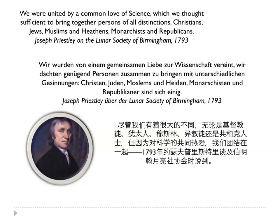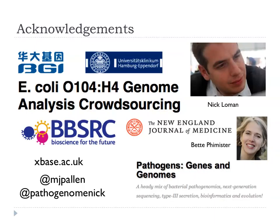I'd like to leave with a thought about internationalism in science that goes back to Birmingham in the 18th century. There was a group called the Lunar Society of Birmingham — prominent scientists, industrialists, and entrepreneurs — and Joseph Priestley was one of the members, pointing out that it was their common love of science that bound them all together. Finally, acknowledgements to BGI, the guys in Hamburg, the crowdsourcing consortium, BBSRC that funded Nick Lohman, and the New England Journal of Medicine for being gracious and helpful in seeing our publication through. You can visit our website, xbase.ac.uk, or follow us on Twitter.